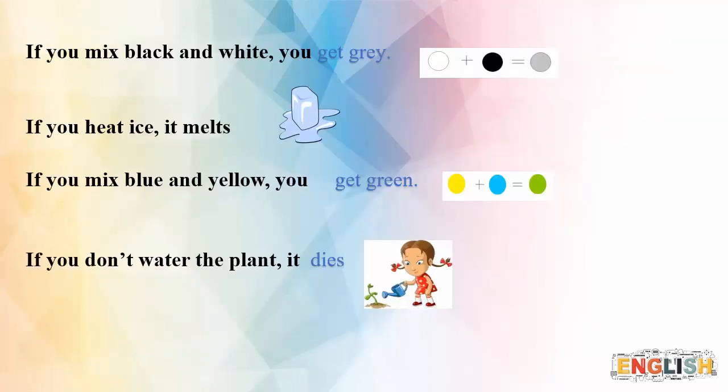Okay, I hope you enjoyed watching the video. Now let's summarize. We have four examples: one — 'If you mix black and white, you get gray'; two — 'If you heat ice, it melts'; three — 'If you mix blue and yellow, you get green'; four — 'If you don't water the plant, it dies.' We use the zero conditional for two things: to talk about a general truth or scientific fact, or to make a statement about the real world.